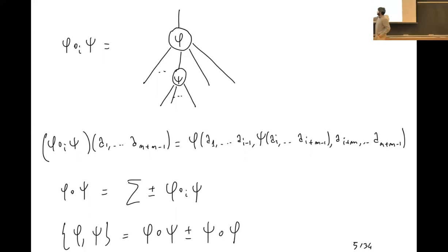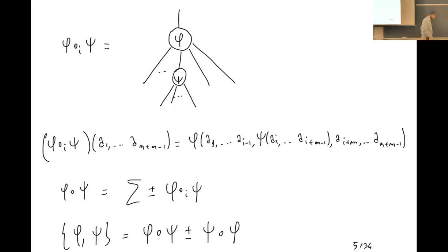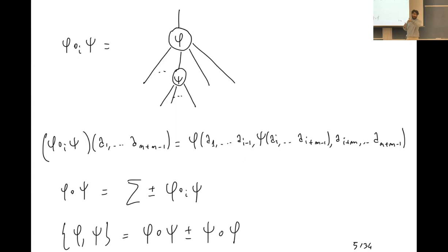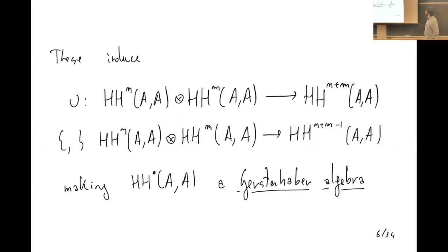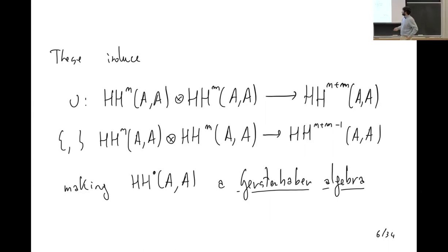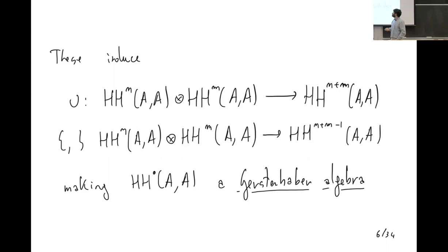We have this total operadic composition — a sum over all inputs — and then we take the graded commutator, which gives us a Lie bracket. Notice that in this notation the Lie bracket has degree minus one, since one input is eaten by joining the two things. As Mathieu recalled, these operations are compatible with the differential and so induce operations on cohomology: a cup product and a Lie bracket, making the Hochschild cohomology a Gerstenhaber algebra — like a Poisson algebra but with the Lie bracket of degree minus one.